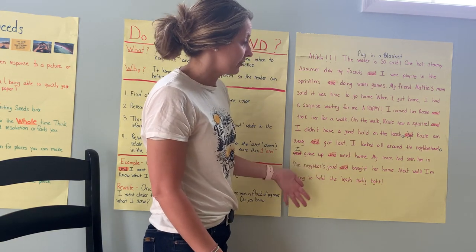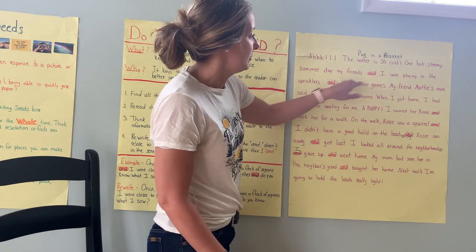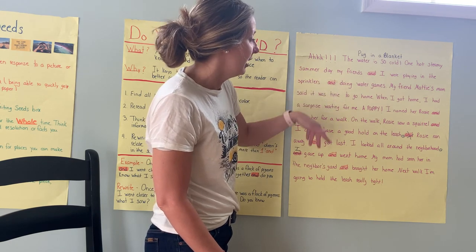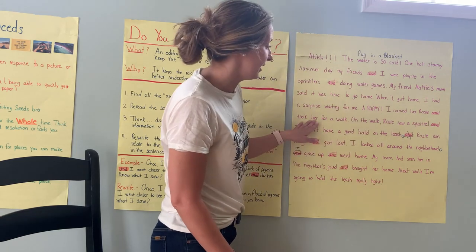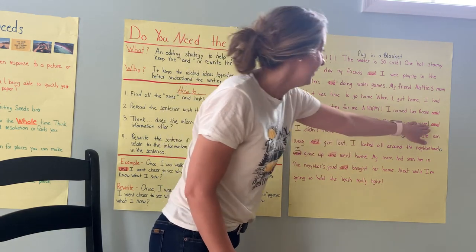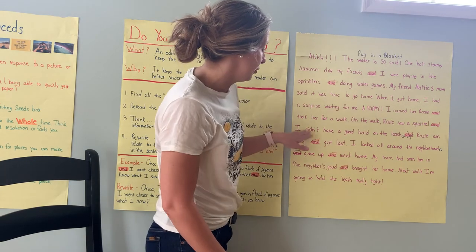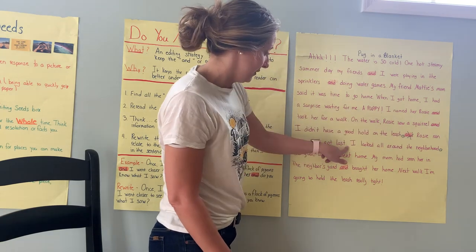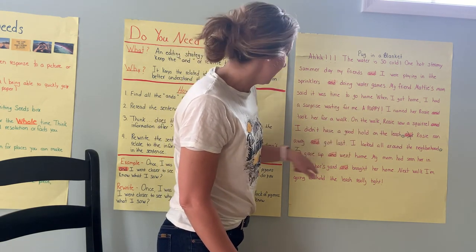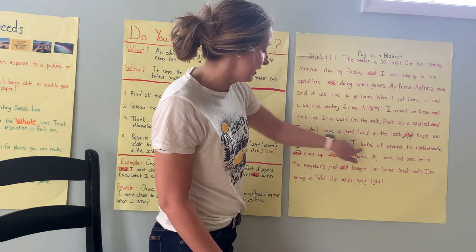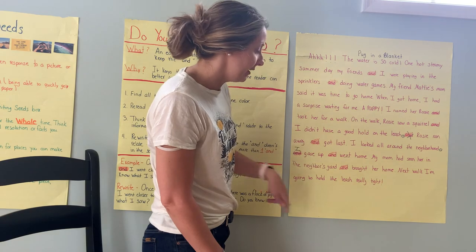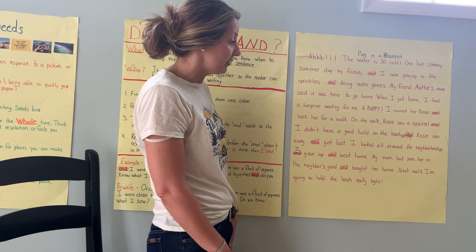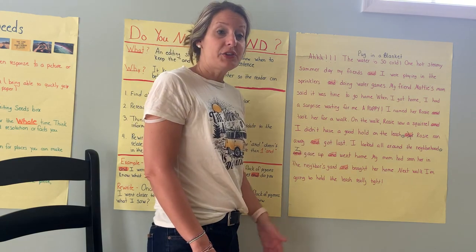So when I go to rewrite my next draft, I know that I'm going to keep the two ands connecting my subject and my verb for more information. I'm going to keep the and that connects the two ideas about what I'm doing. I'll keep the and that connects the two related ideas about Rosie, then put a period and make a new sentence with those other ideas. And I'll keep the and connecting mom's actions. So I think my story is pretty good now with using the and. Now it's your turn to give it a try. Good luck!